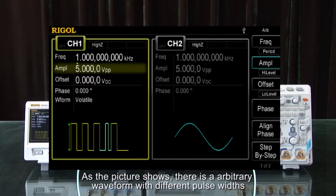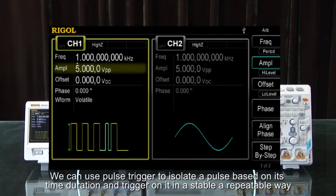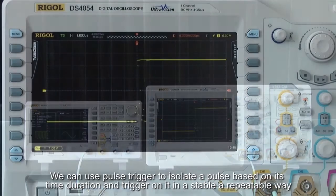As the picture shows, there is an arbitrary waveform with different pulse widths. We can use pulse trigger to isolate a pulse based on its time duration, and trigger on it in a stable and repeatable way.